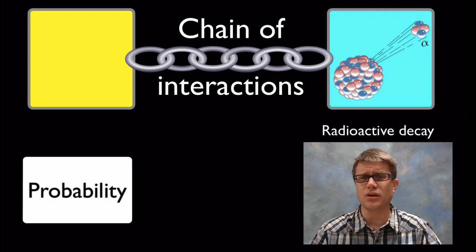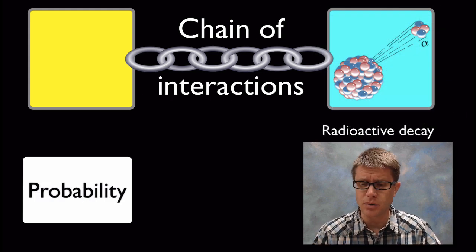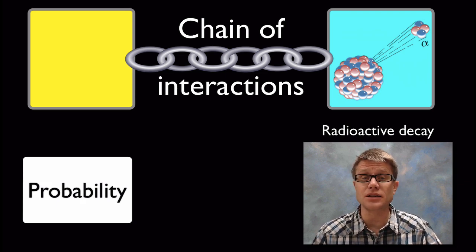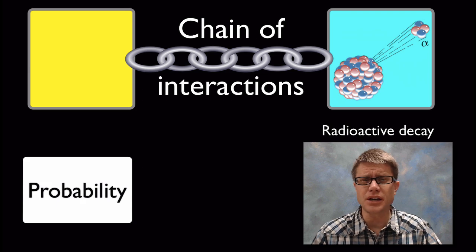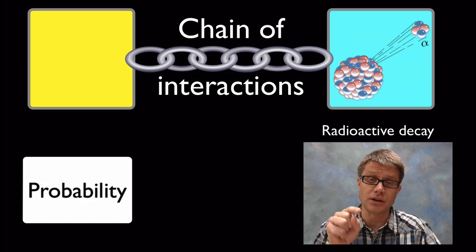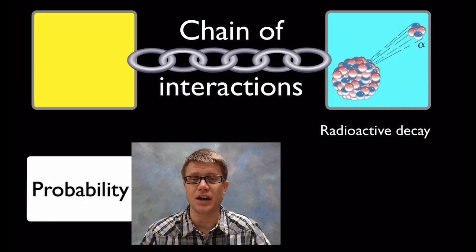Also sometimes it's just a probability. If you're looking at a particle, what's the probability that we're going to get radioactive decay? What's the odds of that? You can predict a probability of how often that's going to occur in a specific period of time. But we can't say it's going to happen right now, here's the cause and here's the effect.